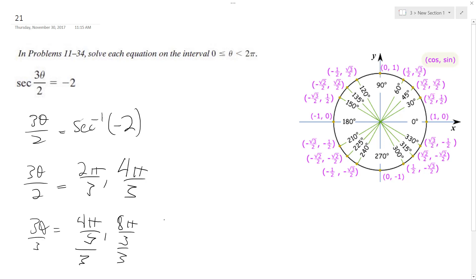So I get theta equals 4 pi over 9 and 8 pi over 9.